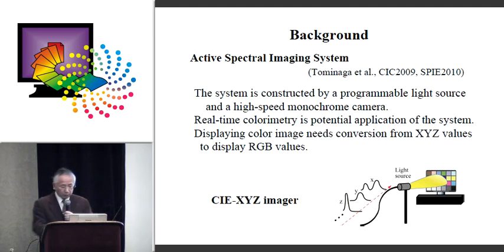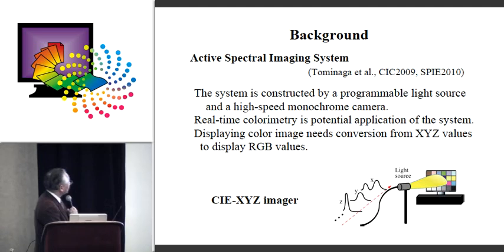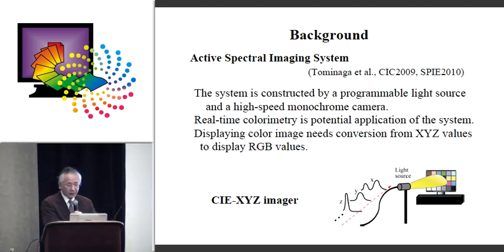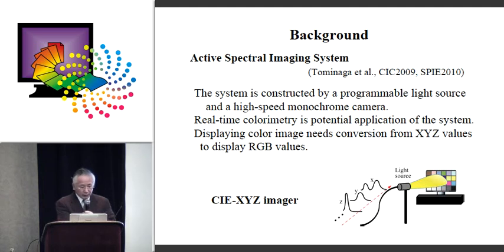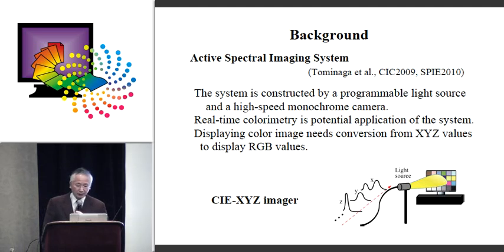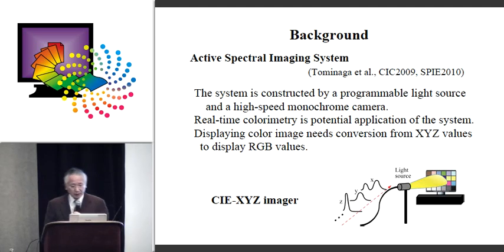So we propose a method for producing and displaying an image of an object. The active spectral imaging system is constructed by a polychromatic light source and a high-speed monochrome camera. Real-time color assembly is one of the potential applications of this system.